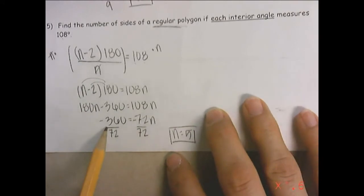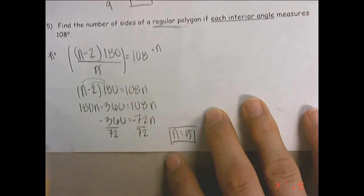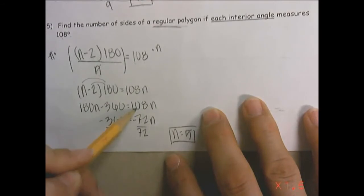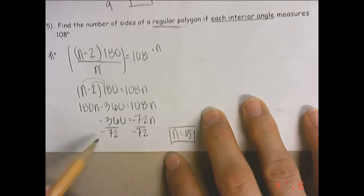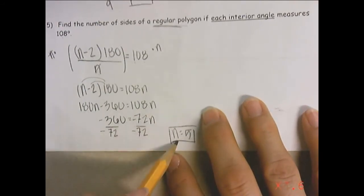And then I'm going to subtract 360 and subtract 360 and get, I mean, sorry, I'm going to subtract 180 and subtract 180 and get negative 360 equals negative 72n. Now I'll divide by negative 72 and divide by negative 72 and then I get n equals 5.